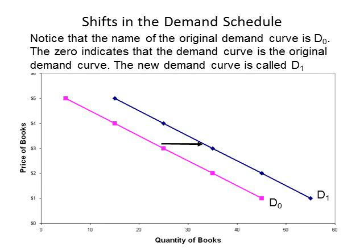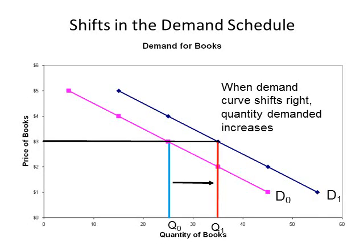In the graph depicted above, D0 is older than D1. D0 represents the original demand curve and D1 represents the newer demand curve after the increase in income. The graph shows that at $3, the quantity demanded on D0 is 25 books, labeled Q0. After the shift in demand to the right, the quantity demanded is 35 books, labeled Q1. Quantities are labeled using different numbers to indicate how old or recent they are, so Q0 is older than Q1.